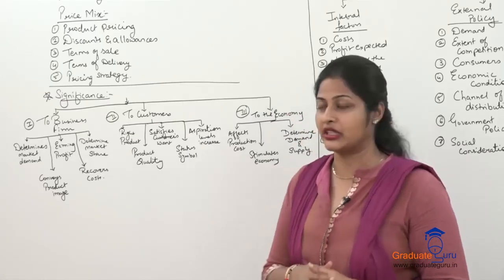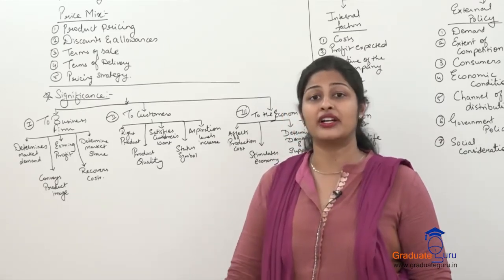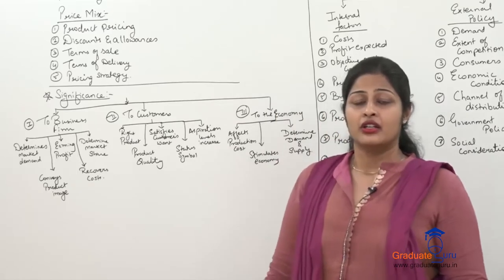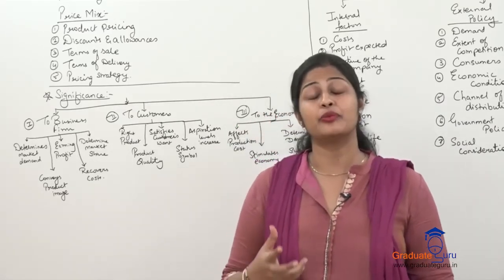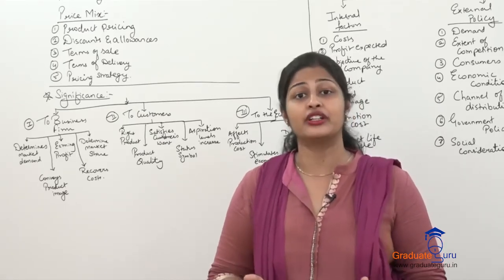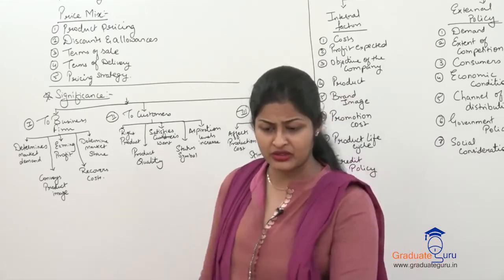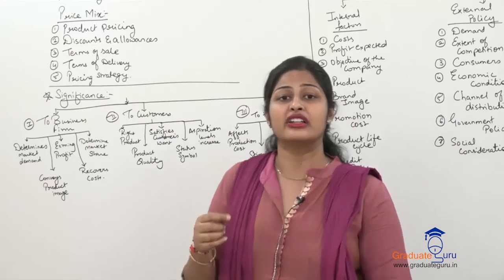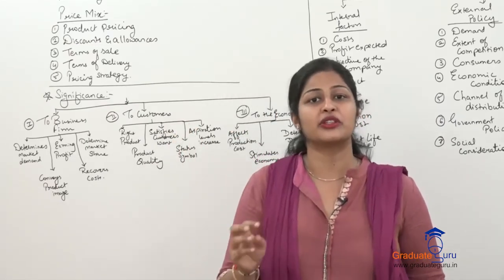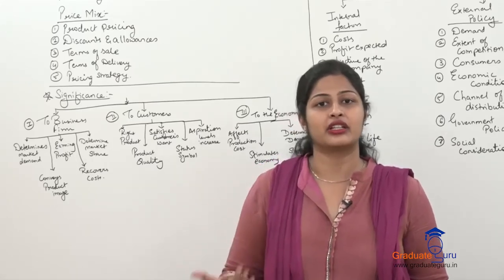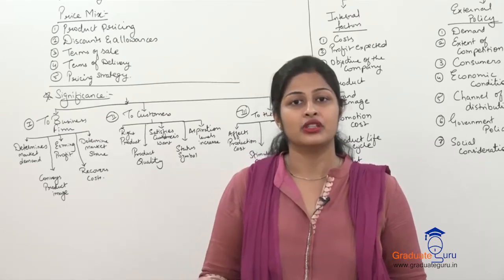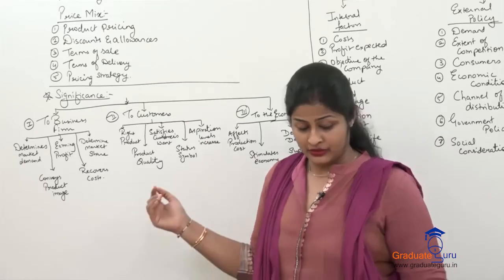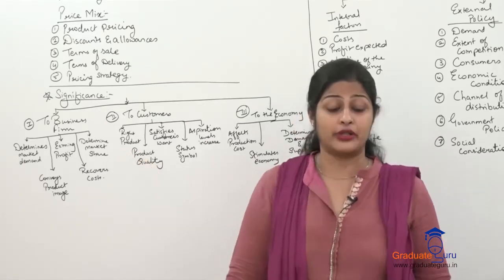Next, how pricing influences the customer. First is identifying the right product through pricing. A customer won't buy any product unless they value it against the price. For example, when purchasing items from a train vendor — bindis, earrings, nail paint — we mentally fix a price of 10 to 15 rupees. If the seller quotes 35 or 40 rupees, we simply reject the product. That is because we know the correct value and prefer buying at the right price only.